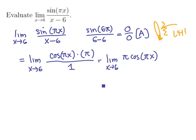For this new function, let's start the whole process over again. If we plug in 6, we have pi times the cosine of pi times 6. That's pi times 1 by periodicity. So we have a limiting value of pi.